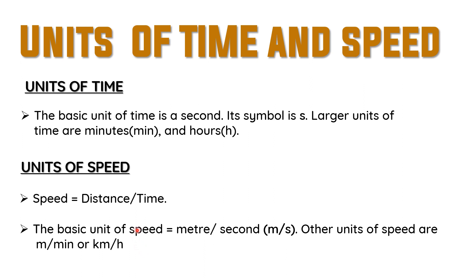To summarize: the unit of time is second, represented by small letter 's'. Larger units are minutes and hours. The unit of speed is derived from the formula speed equals distance by time. Since the unit of distance is meter and unit of time is second, the basic unit of speed is meter per second.